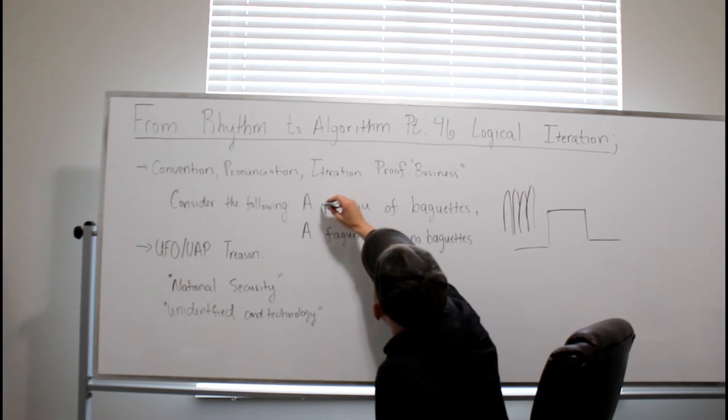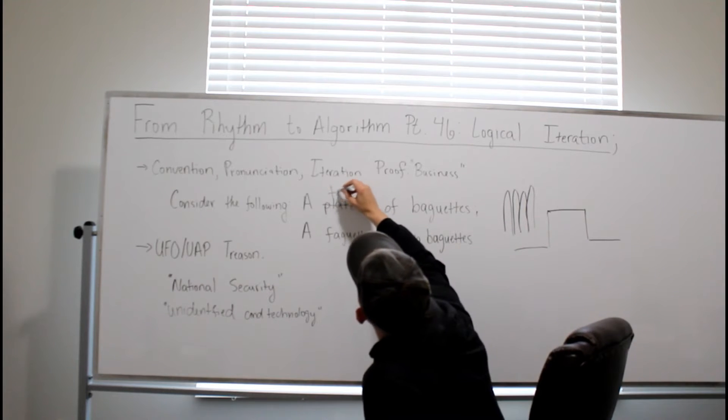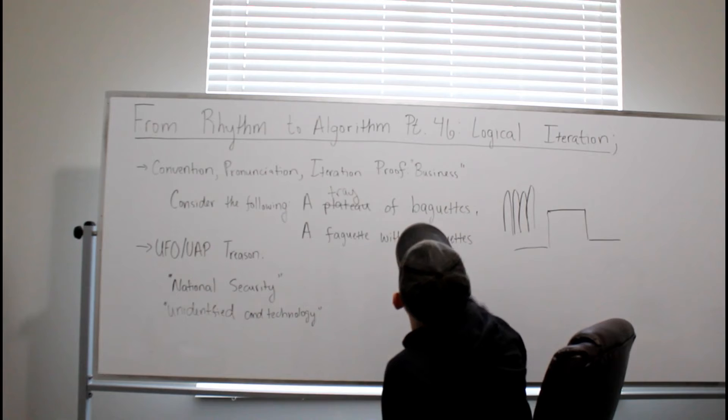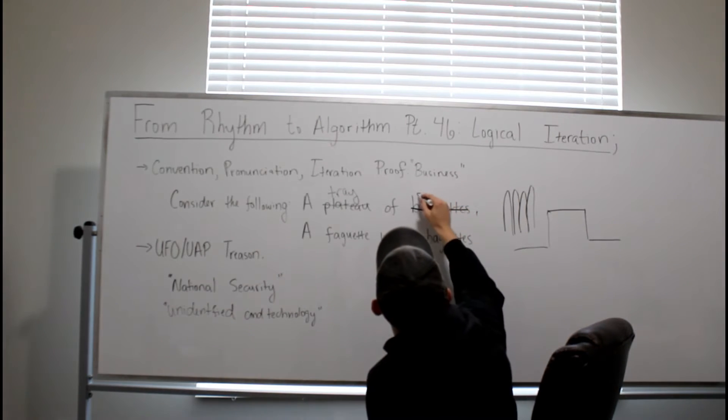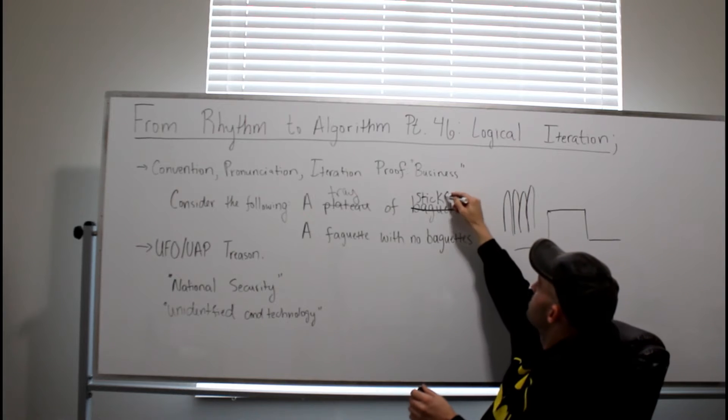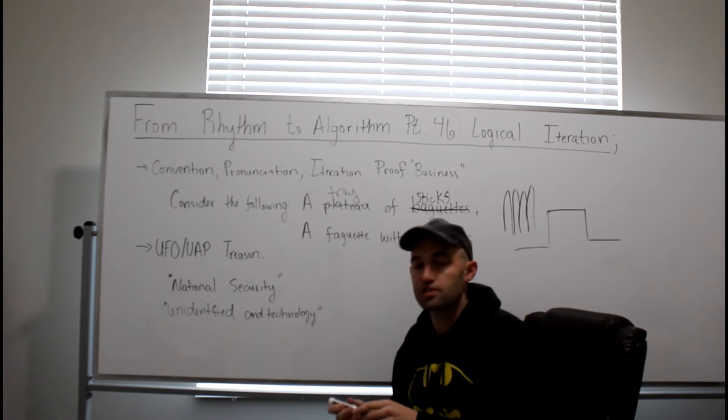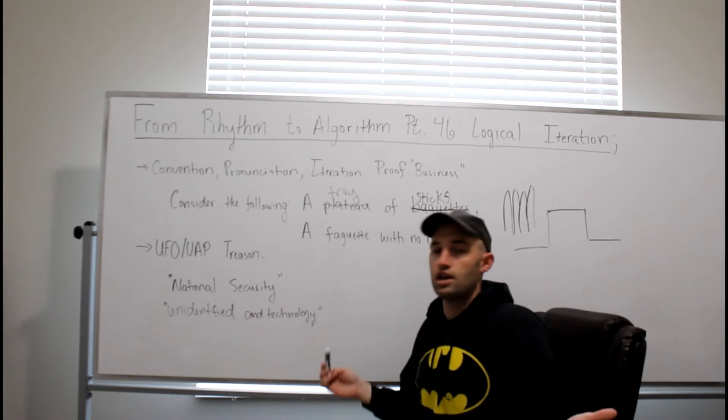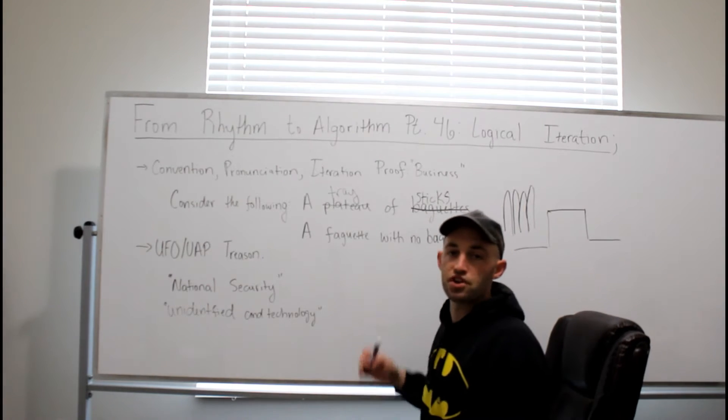Well, if you look up plateau, plateau is literally a tray. And if you look up baguette, baguette is literally stick. So a tray of sticks, like a lunch tray with sticks on it. What did I just prove? That was clearly not what was in your head.